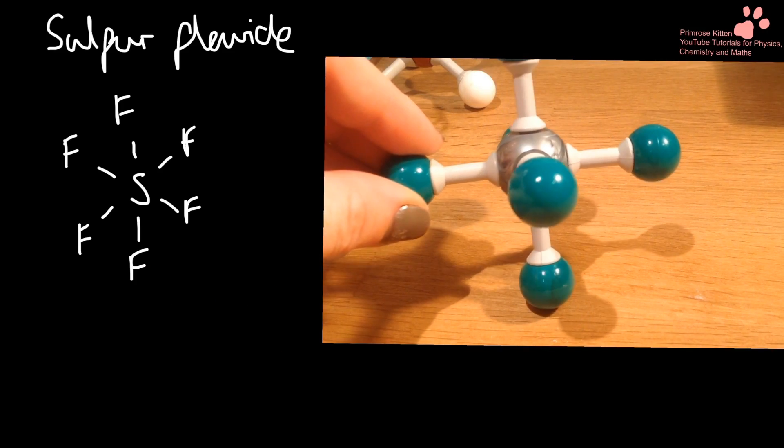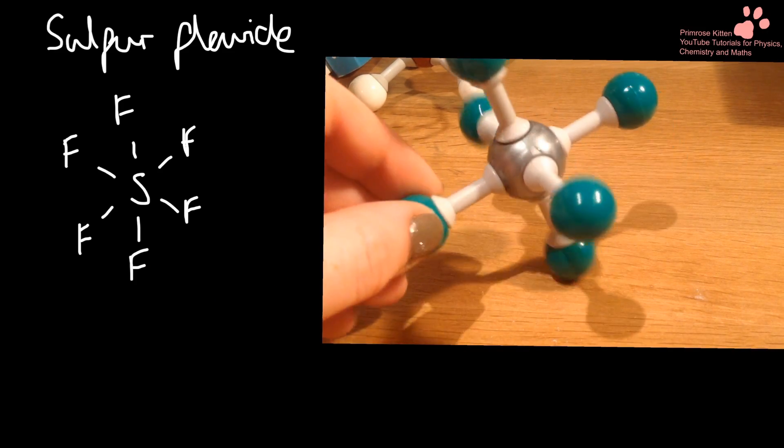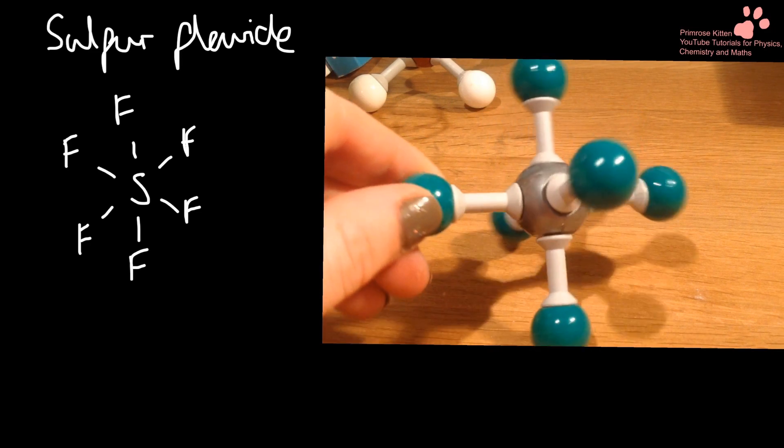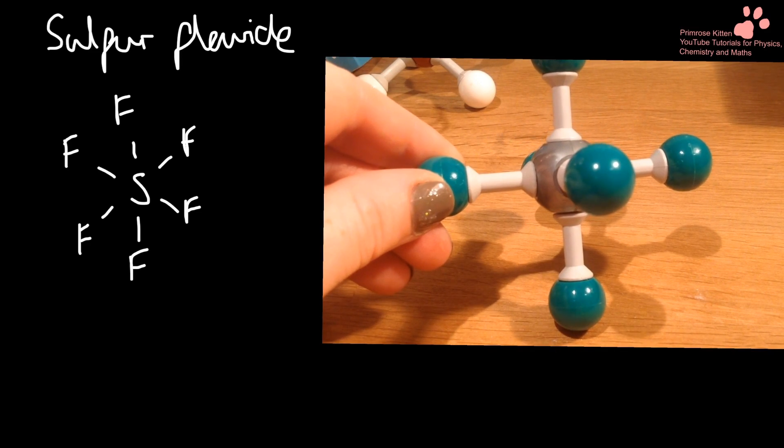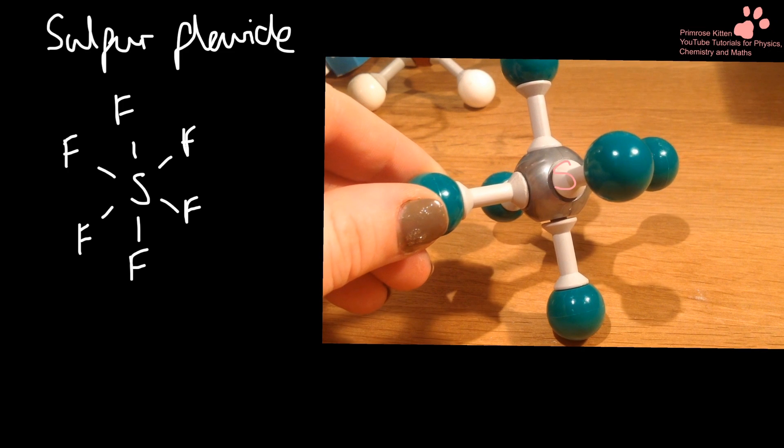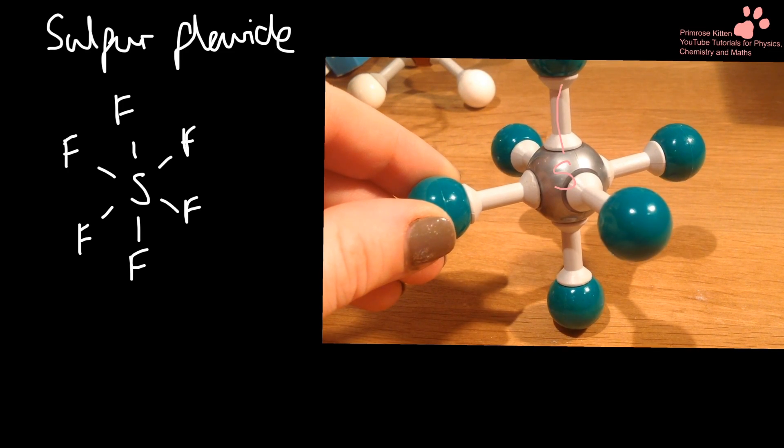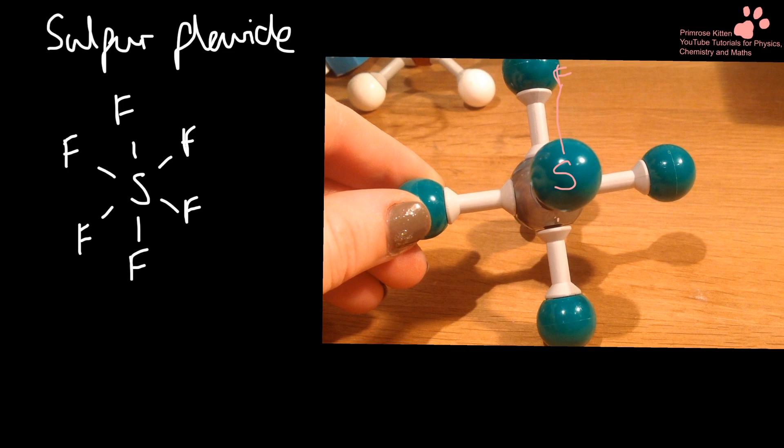Another one here that doesn't obey the octet rule and is quite large and complicated to draw. So we have our sulfur in the middle there. We have a fluorine in plane. We have another fluorine in plane. We have a fluorine behind us. This one is also going behind us. Here is a wedge coming towards us and then this other wedge coming towards us there.